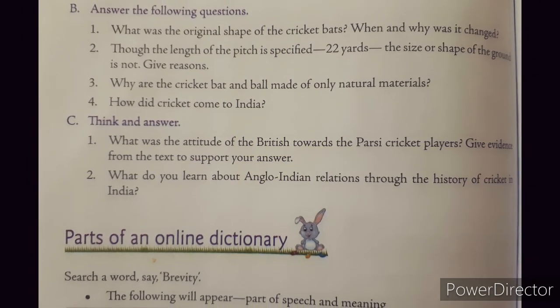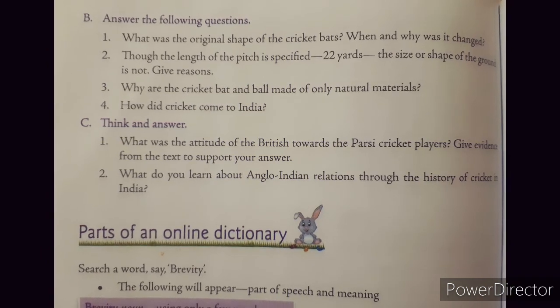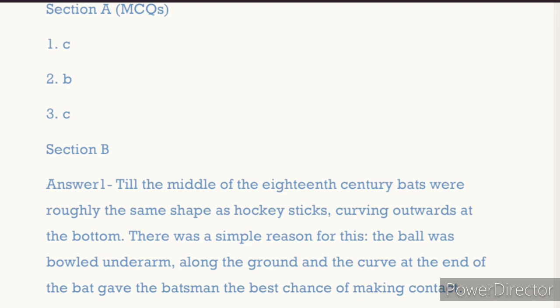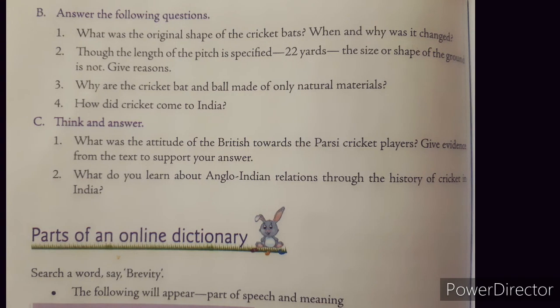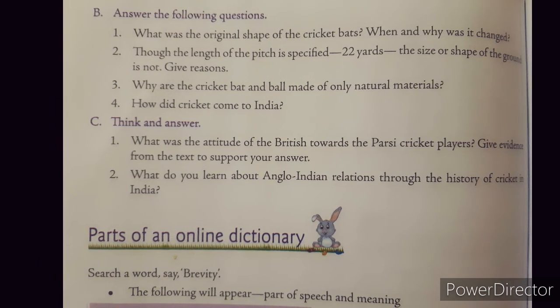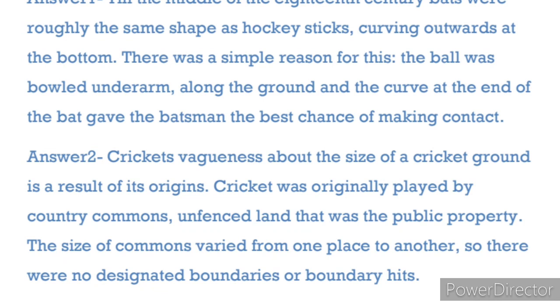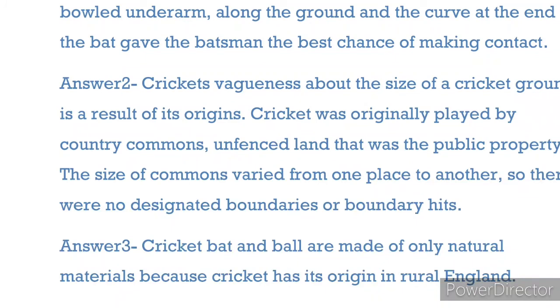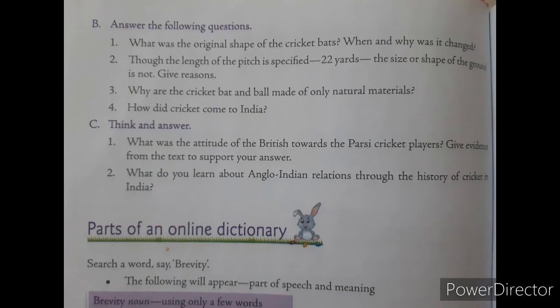Section B has four questions. Question 1: What was the original shape of cricket bats and why was it changed? Answer: Till the middle of the 18th century, bats were roughly the same shape as hockey sticks, curving outwards at the bottom. The ball was bowled underarm along the ground, and the curve gave the batsman the best chance of making contact. Question 2: Though the length of the pitch is specified as 22 yards, why is the size or shape of the ground not? Answer: Cricket was originally played on country commons — unfenced public land — and the size of commons varied from place to place, so there were no designated boundaries.